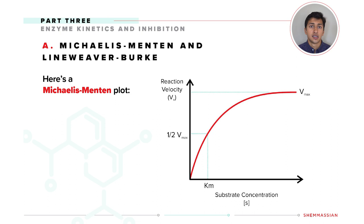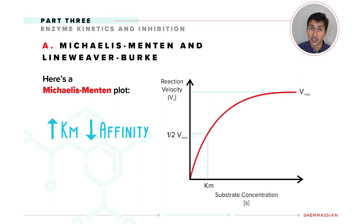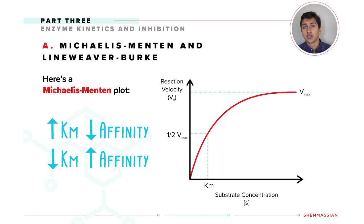Another way you can think about Km is that it's the affinity of the enzyme for the substrate. A higher Km means a lower affinity, and a lower Km means a higher affinity. If you want your enzyme to work more quickly, you'd want a lower Km because your enzyme can then bind to your substrate much more tightly.